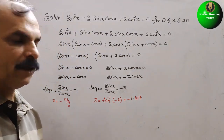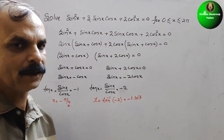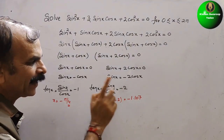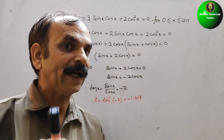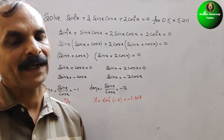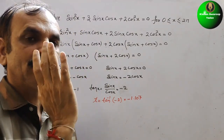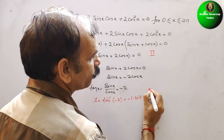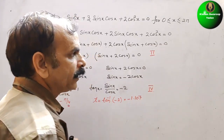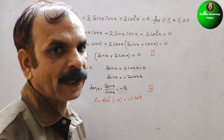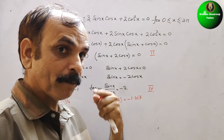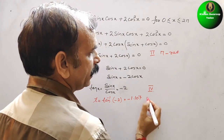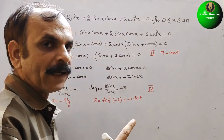Looking at these values, both −π/4 and −1.107 are negative. We know that tangent is negative in the second and fourth quadrants. In the second quadrant, we write the angle as π minus the reference angle.